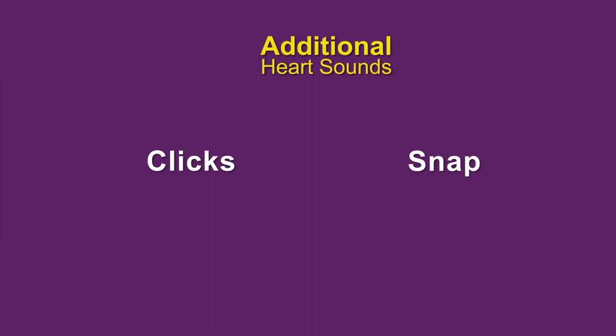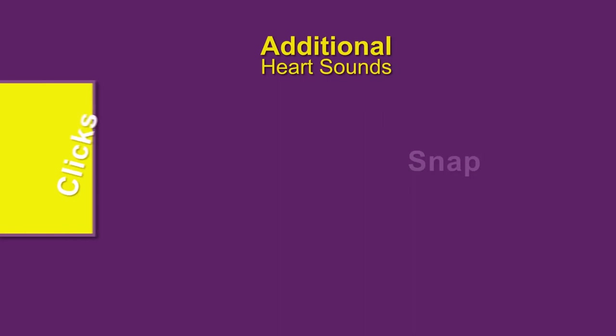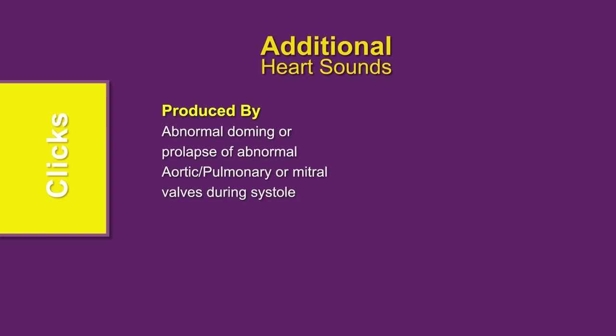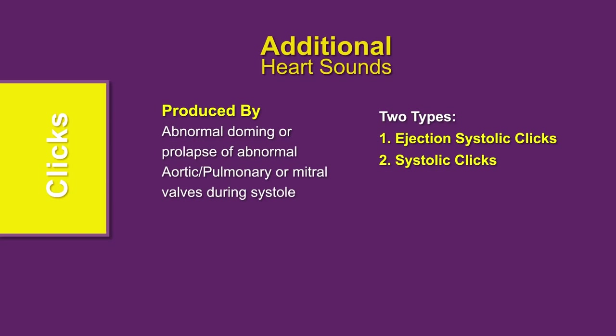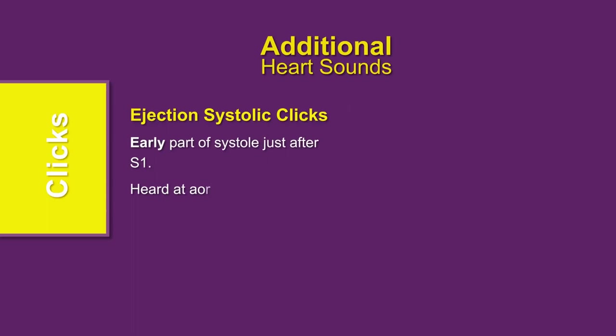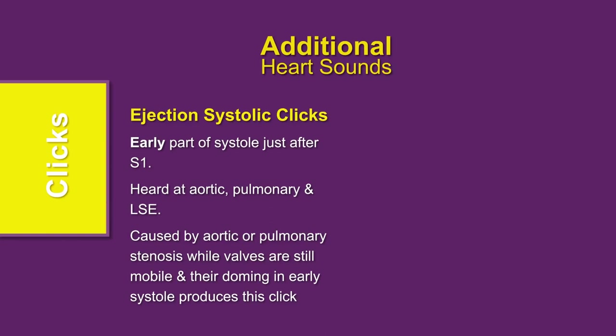Now let's see the third category: additional heart sounds, which includes clicks and snaps. Clicks are produced during systole by doming of abnormal aortic or pulmonary valves, or due to prolapse of the mitral valve. There are two types of clicks: ejection systolic clicks and systolic clicks — both are high-pitched sounds. Ejection systolic clicks occur in the early part of systole, just after S1. These are heard in the aortic and pulmonary areas as well as on the left sternal border, caused by the doming of aortic or pulmonary stenosis. Such clicks are audible as long as valves are still mobile and not calcified.